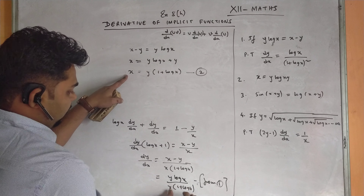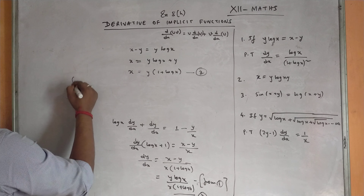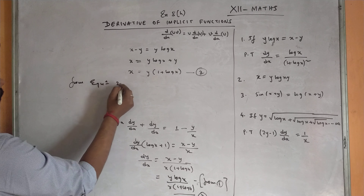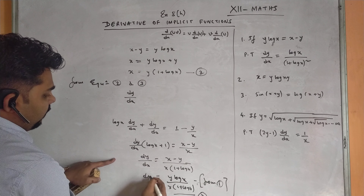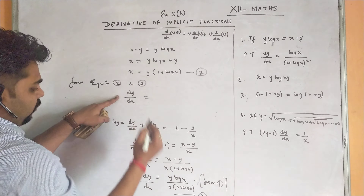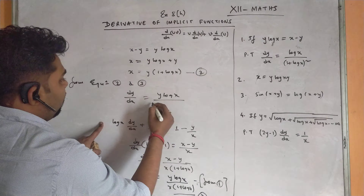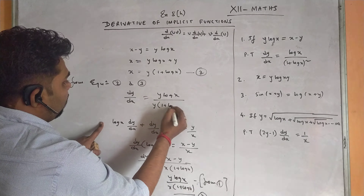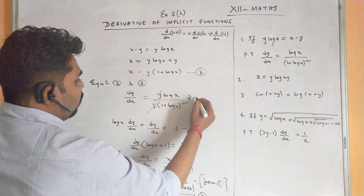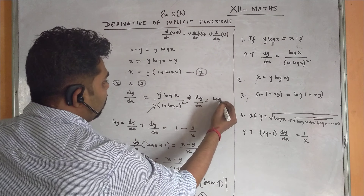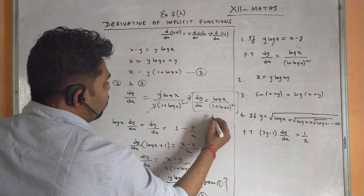Substituting from equations 2 and 3 into our dy/dx expression: dy/dx = y·log x divided by [y·(1 + log x)·(1 + log x)]. The y cancels, giving dy/dx = log x / (1 + log x)². This is our final answer, which equals the RHS, thus proved.